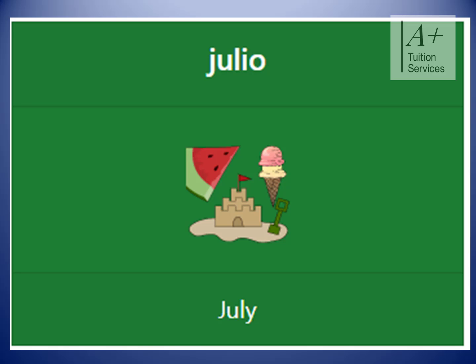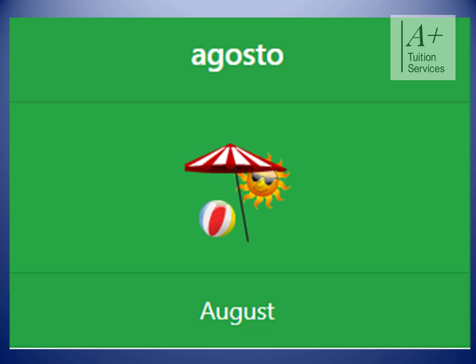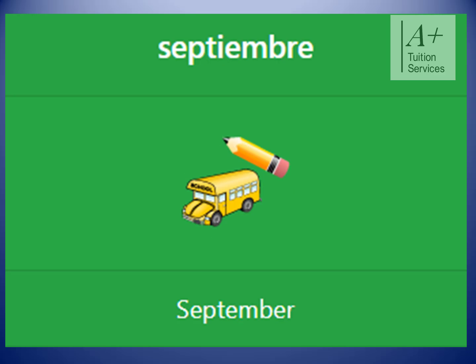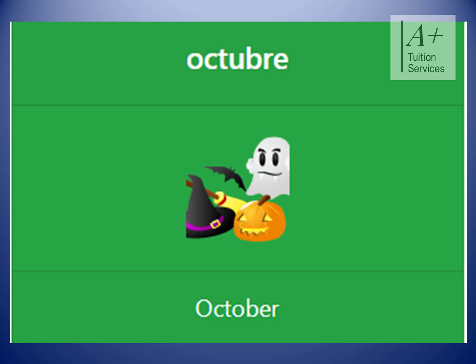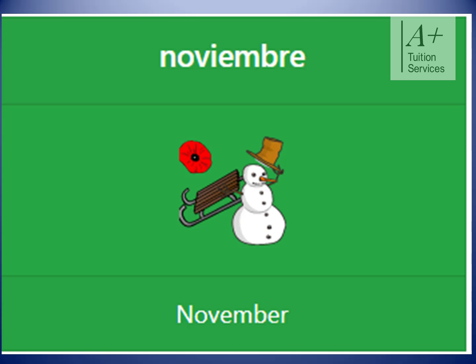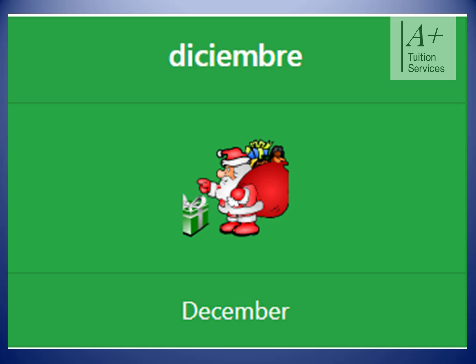Julio, which means July. Agosto, which means August. Septiembre, which means September. Octubre, which means October. Noviembre, which means November. Diciembre, which means December.